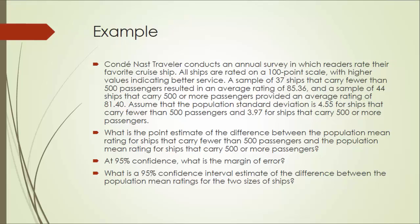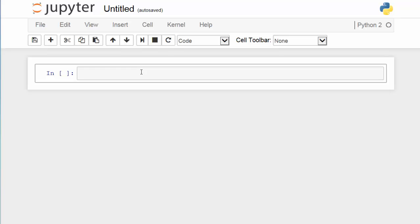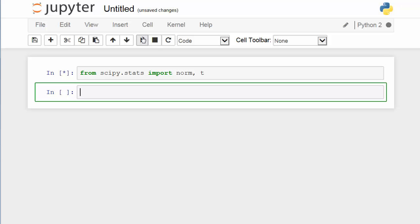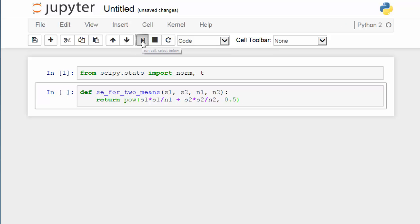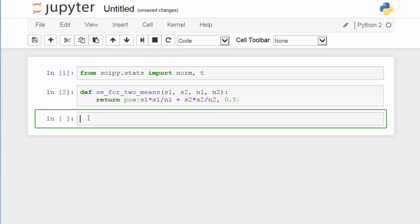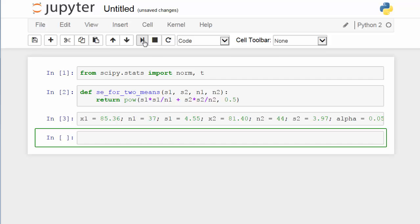We are going to do all the calculations in our IPython notebook. Let's take a look. Well, first of all, let's import the normal distribution and t-distribution from the scipy.stats package. Next, I'm going to define a simple function to compute the standard error for the difference between two population means. And then, I'm going to collect information from our problem statement. I'm using x1 for x1 bar and x2 for x2 bar, etc.